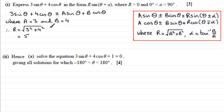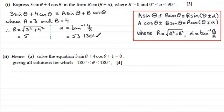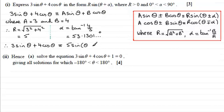To get α, we use α = arctan(b/a), which is arctan(4/3) for this example. Make sure your calculator is in degrees mode. Working that out gives 53.1301...°. So therefore 3 sin θ + 4 cos θ is identically equal to 5·sin(θ + 53.1°) — giving α to 1 decimal place.